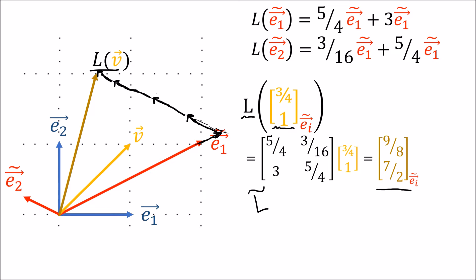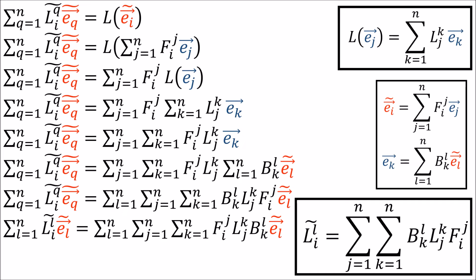Before ending, here's something that will make your life easier. The derivation for transforming matrix components is quite ugly — there are tons of summation signs to write out. Fortunately, there's a key observation: whenever a summation occurs, an index letter appears once on top and once on the bottom. For example, here the summation is over K with K on top and bottom; the next summation is over J; and the next over L. Anytime we see an index repeated on the top and bottom, we know a summation is happening — so we don't need to write out the summation signs at all.